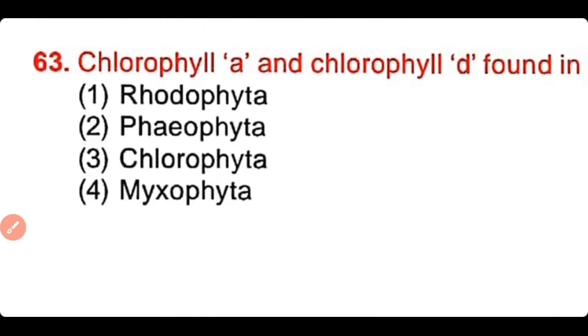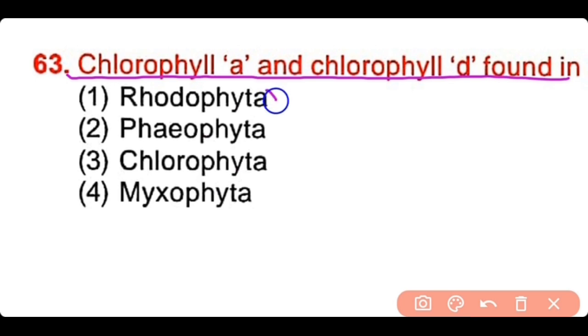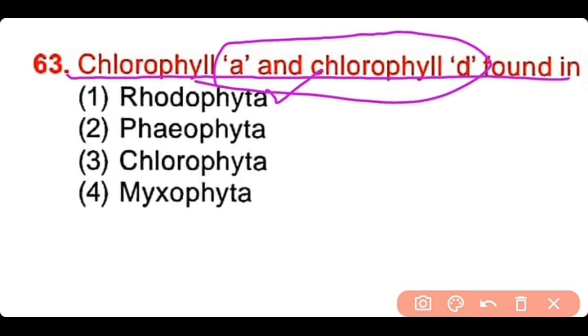Question number 63: Chlorophyll A and chlorophyll D are found in rhodophyta, pyrrophyta, chlorophyta, or myxophyta? The correct answer is option 1. Rhodophyta or red algae have chlorophyll A as well as chlorophyll D.